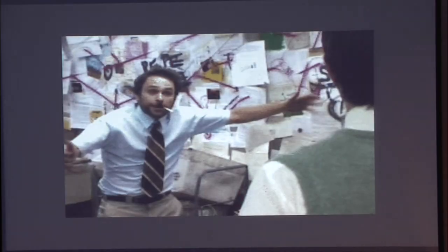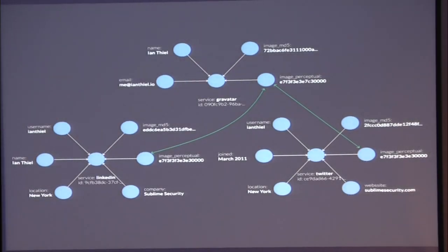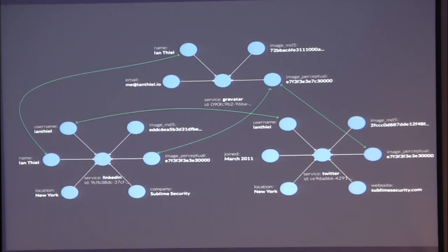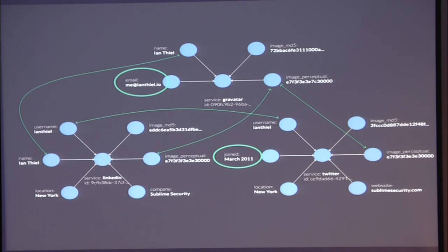We take these perceptual image hashes and add them to our graph — perceptual hash nodes for LinkedIn, Twitter, and Gravatar. Now we can create connections between disparate graphs using perceptual image hashes and an acceptable distance threshold. We gain additional confidence by connecting same usernames and same full names. What does this allow us to do? We've gone from an email address to a sophisticated graph including an inception date of March 2011 — Ian's been around on the internet for nine years. That is a high source of reputation.